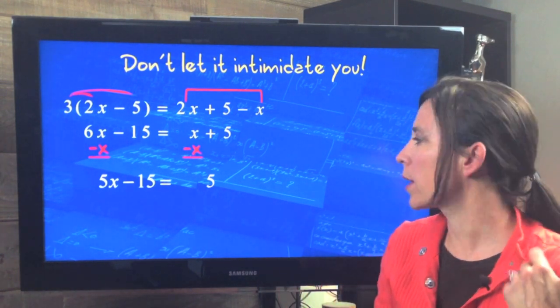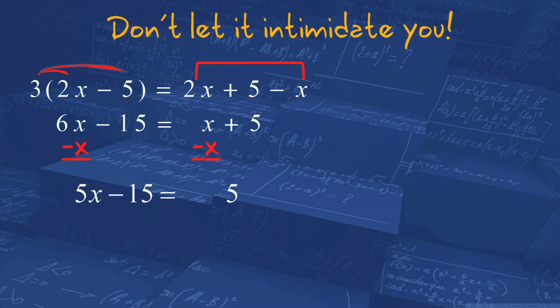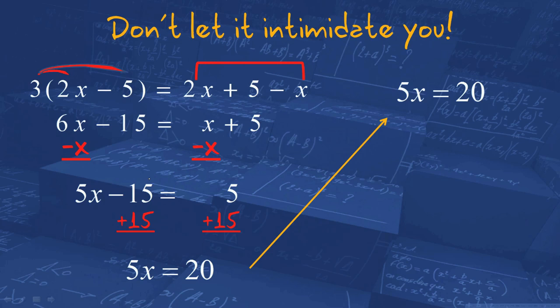So now we're back to the other example. We have one x, it's on the left, so let's get this term by itself by adding 15 to both sides. Let's move it up here so we have a little bit more room. And now we want to get the x by itself by moving that 5 using division. x equals 4.